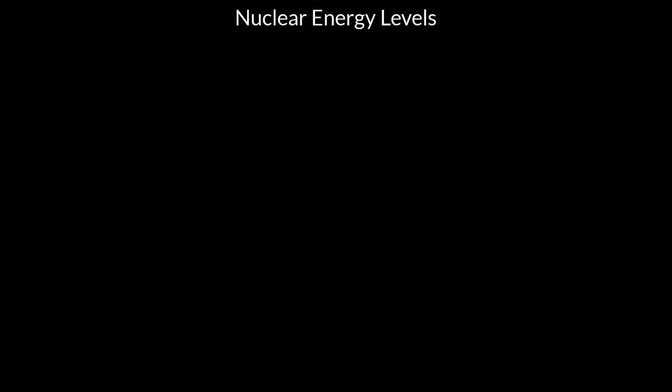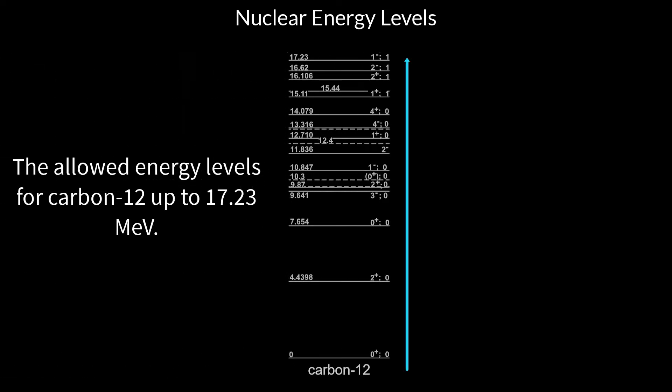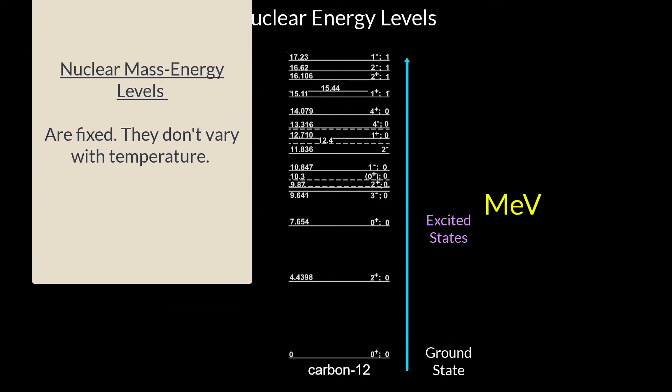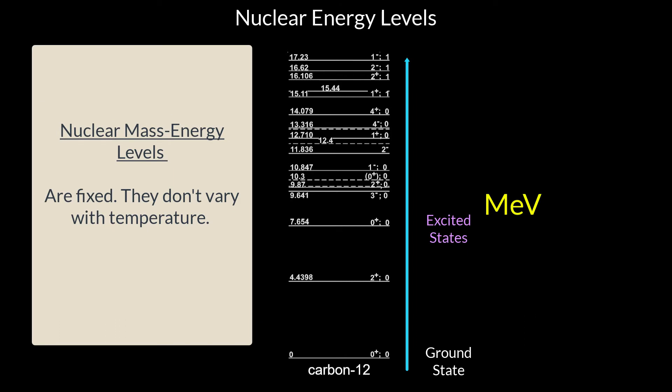In this story, we're not dealing with electrons, we're dealing with nuclei and their energy levels. Just like electrons, nuclei are governed by the laws of quantum mechanics and have permitted energy levels. These are shown here for carbon-12. Nuclei have ground states and excited states. The energies involved are much higher than electron energies because nuclear masses are so much greater. We're dealing with a scale of millions of electron volts. These are nuclear mass energies. They are fixed and independent of the speed of a nucleus. They don't vary with temperature. The kinetic energy varies with temperature and isn't included in these numbers.